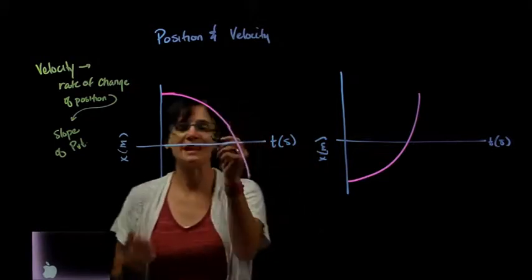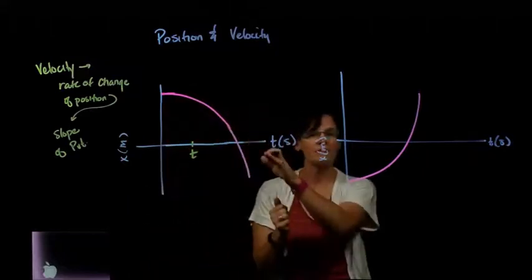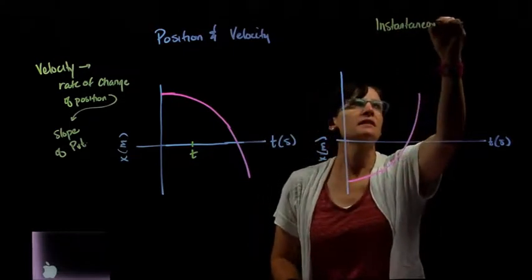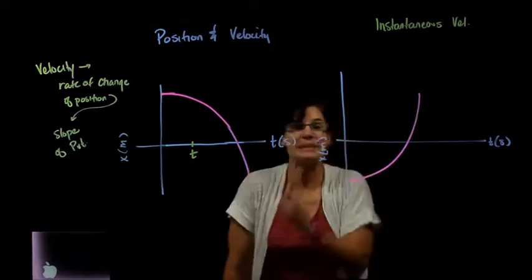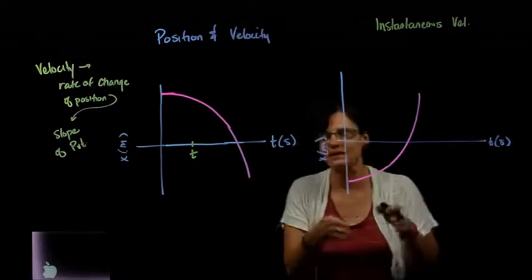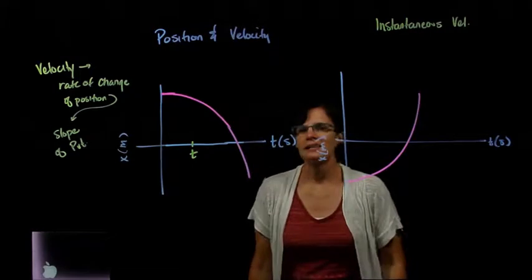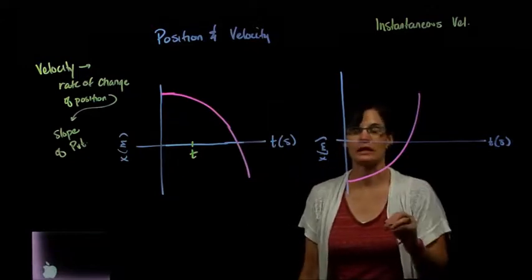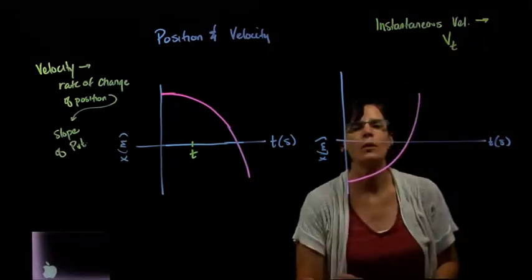If I wanted to know the velocity of this object at this specific point in time t, the velocity at a very specific point in time is what we call the instantaneous velocity. I've already talked about that in a previous lecture when we were introducing the players of motion — the velocity at the beginning of the motion is the initial velocity, and the velocity at the end is the final velocity, each at a very specific point in time.